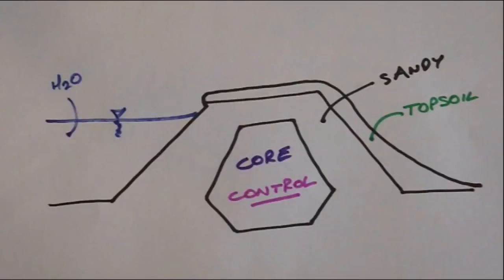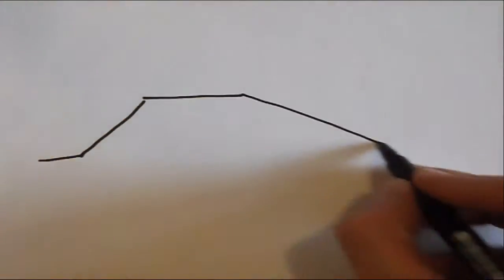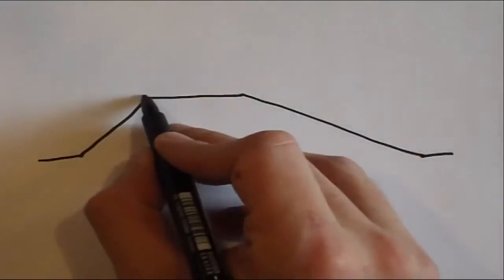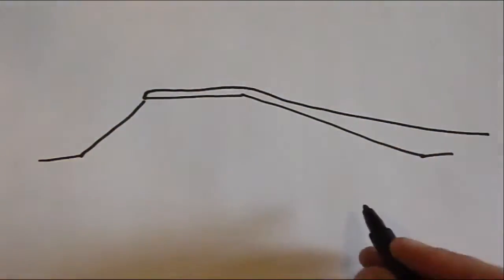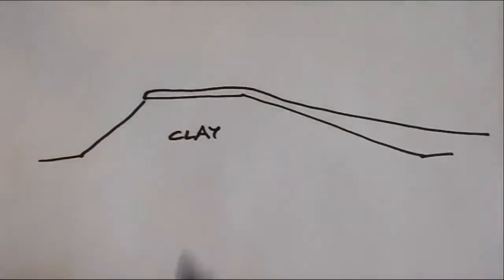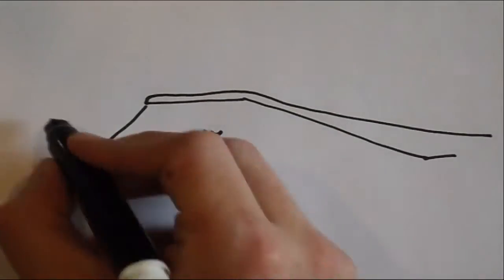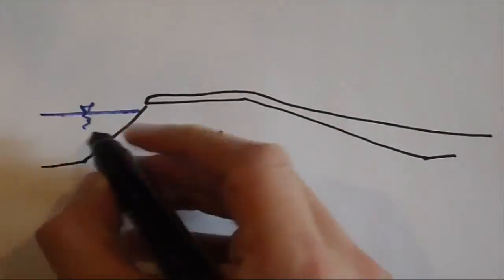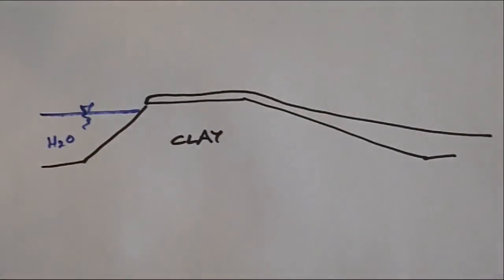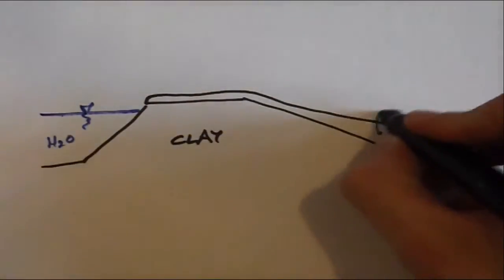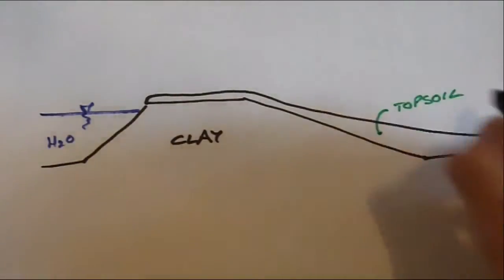However, after much deliberation we decided that this type of dam is more complex than what was required, so we decided to switch to a homogeneous dam which is made entirely of the low permeability material that we would have used in our core in the first design.